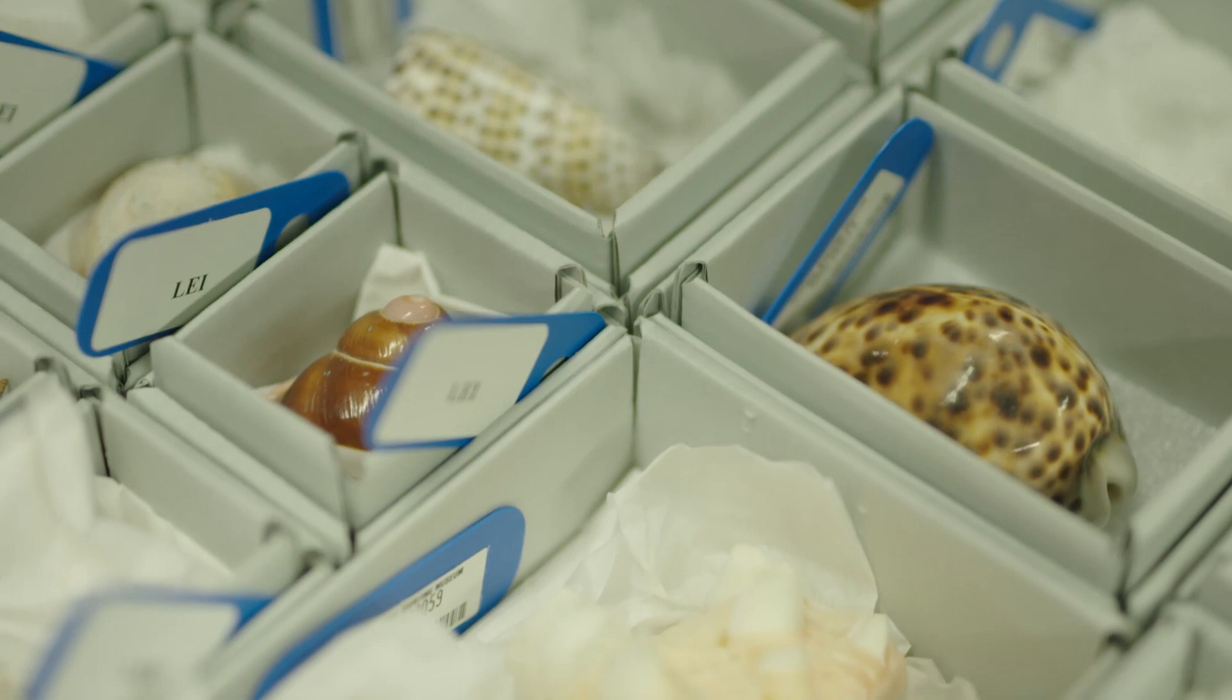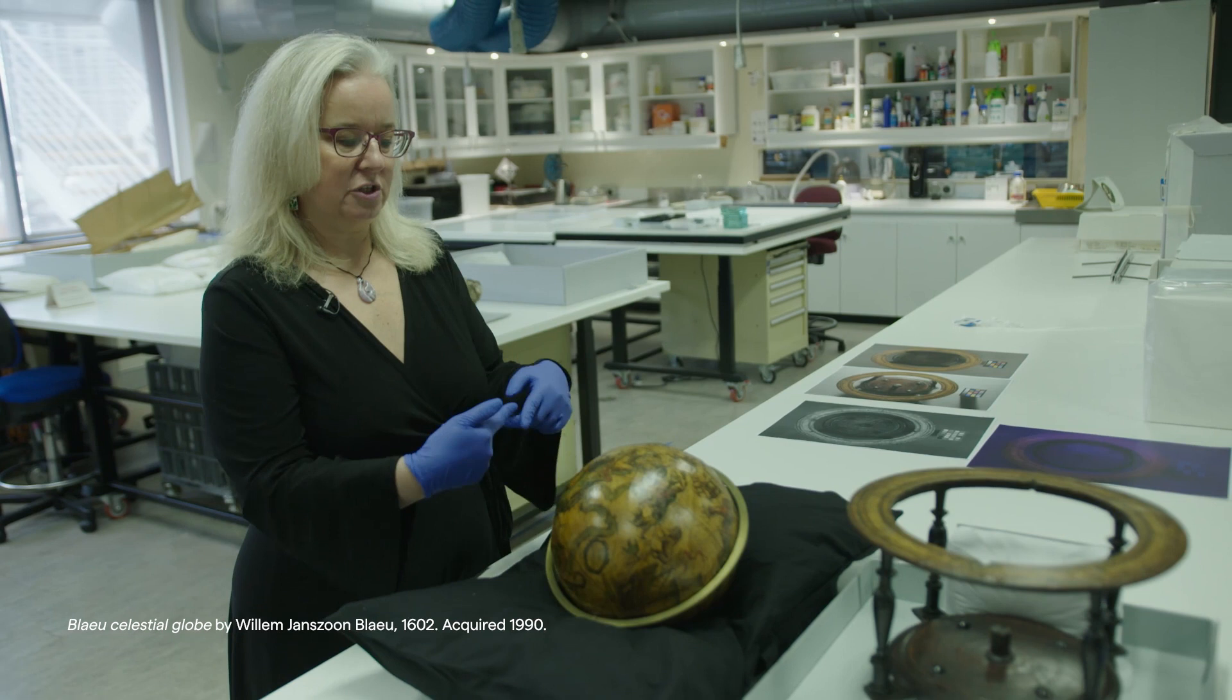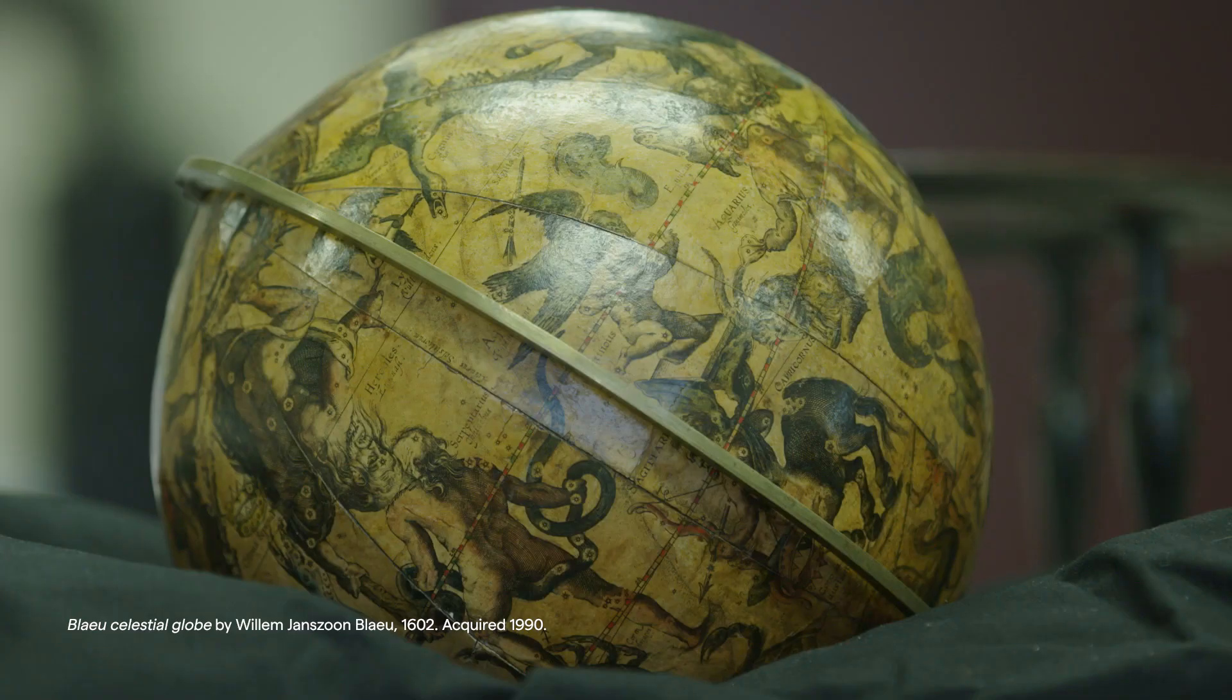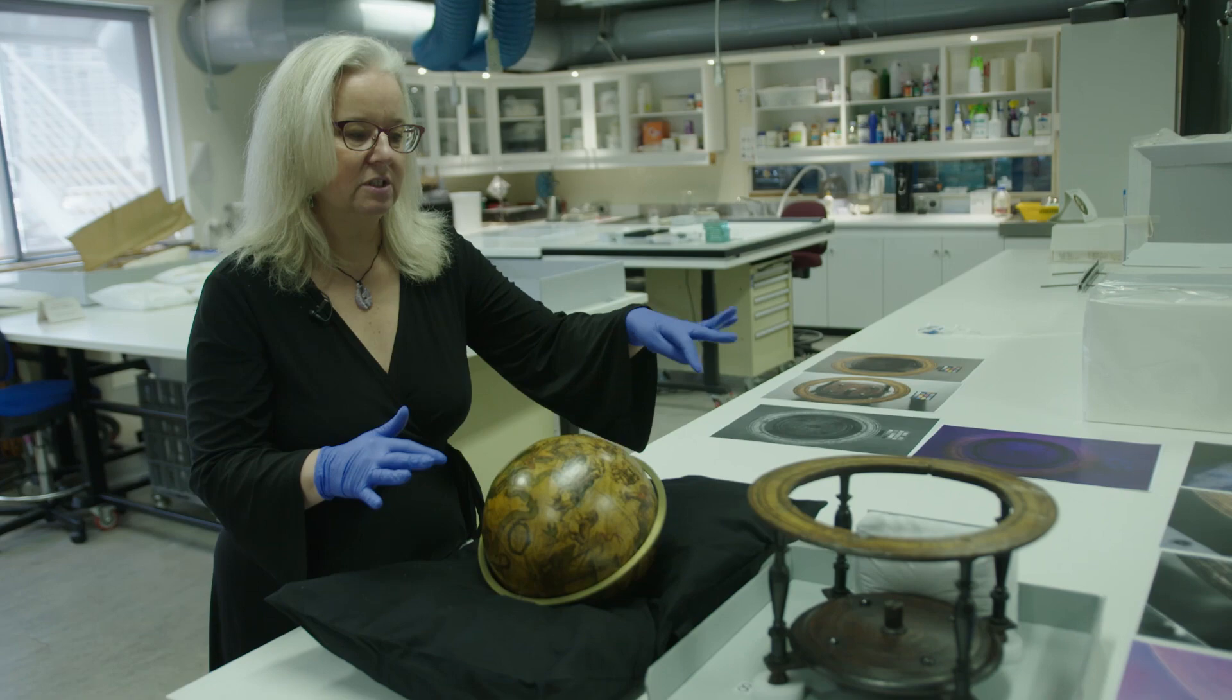So this is one of the treasures in our collection, it's a 1602 Blau celestial globe which represents the skies and the star constellations, made out of plaster with paper surface painted and varnished, also to show us detail of damage that might not be visible with the naked eye.